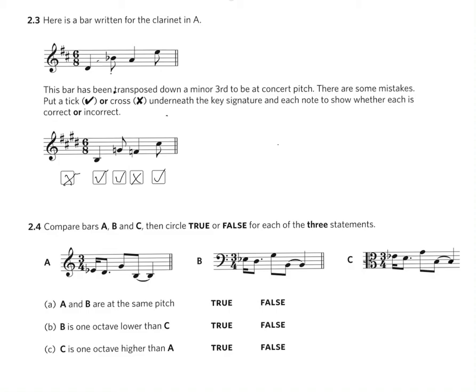In the second question we're asked to compare bars A, B and C and then circle true or false for each of the three statements. We've got a bar of music in A which is in the treble clef, B which is in the bass clef, and C which is in the alto clef. Statement A says that A and B are the same pitch.